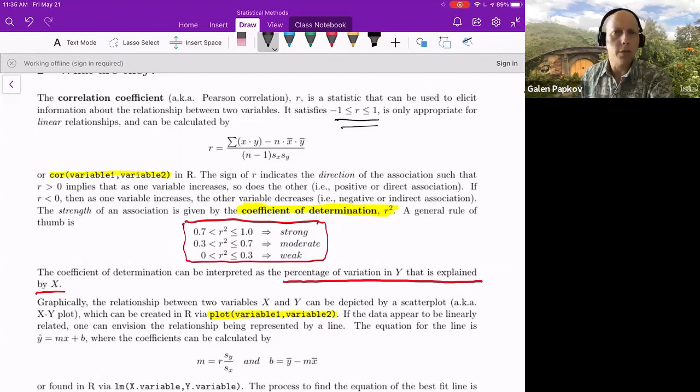And so r must be equal to or between plus and minus 1. So if you are 1.3, there's a calculation error. Or likewise, if you're more negative than negative 1, something has gone wrong.